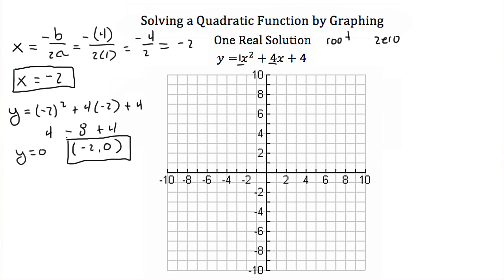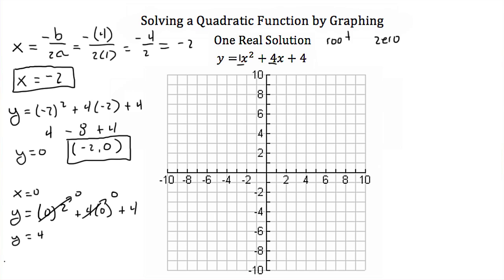Now we're going to need one more point. I'm going to choose the y-intercept because it's easy to solve for. The y-intercept occurs when x is equal to 0. So if I plug that back into my equation, I'll have 0 squared plus 4 times 0 plus 4. 0 squared is 0, 4 times 0 is 0, so y is just equal to 4. So our other point is going to be (0, 4).